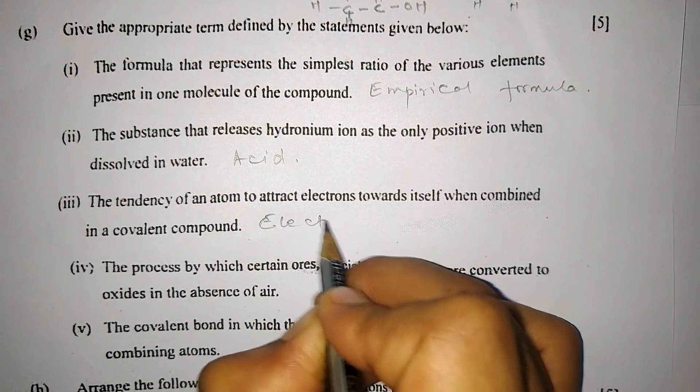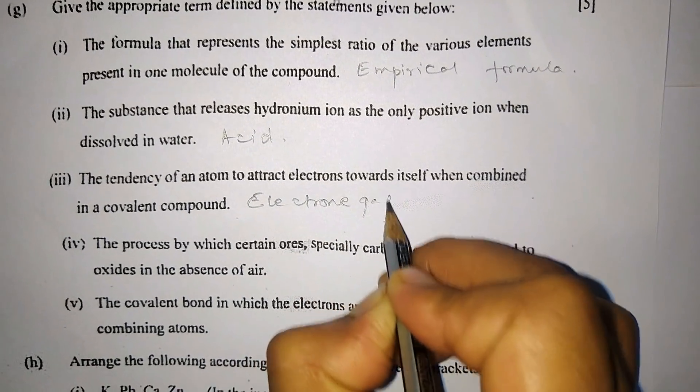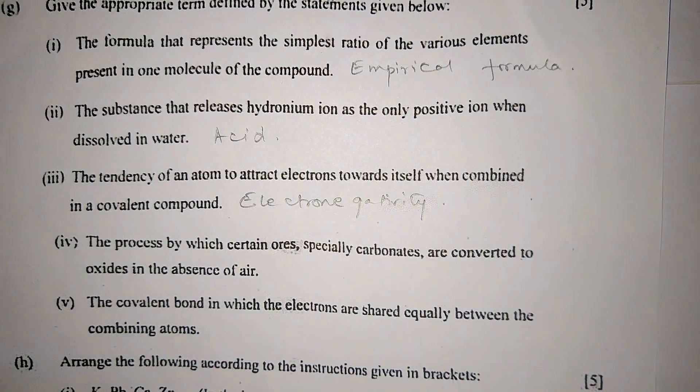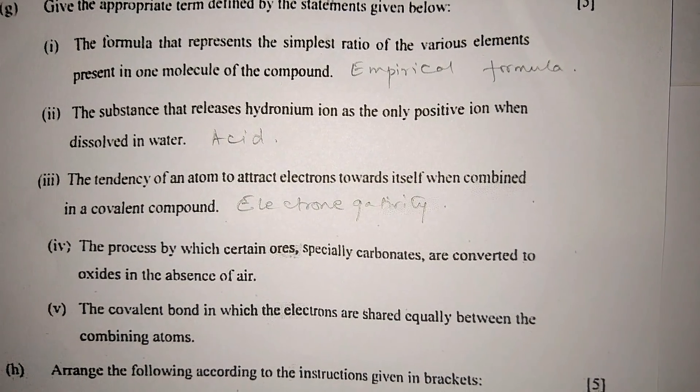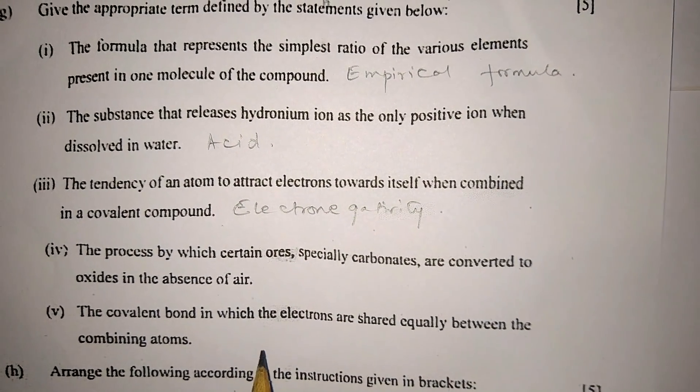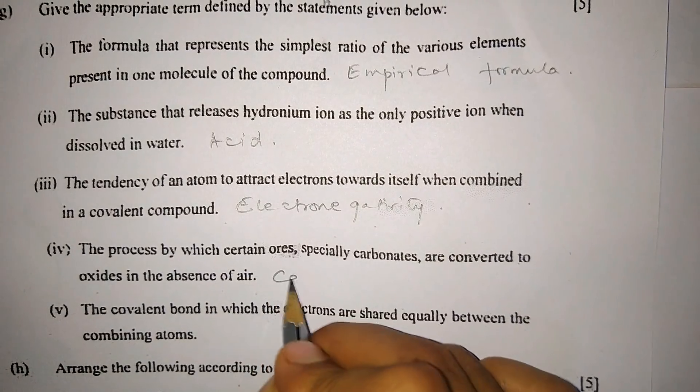Number two: The substance that releases hydronium ion as the only positive ion when dissolved in water are acids. Number three: The tendency of an atom to attract electrons towards itself when combined in a covalent compound is electronegativity.